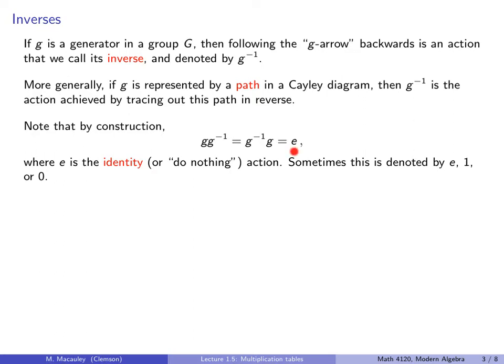Here, e is the identity or do-nothing action. Sometimes we denote the identity action by e or by 1, especially if we're emphasizing multiplication, or sometimes even by 0 if the action is addition, although usually we will stick with e.